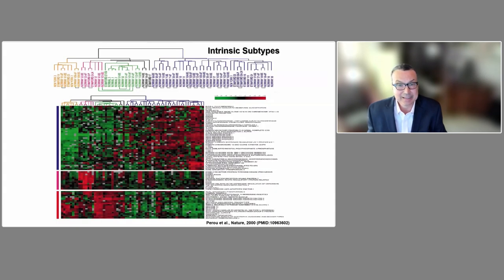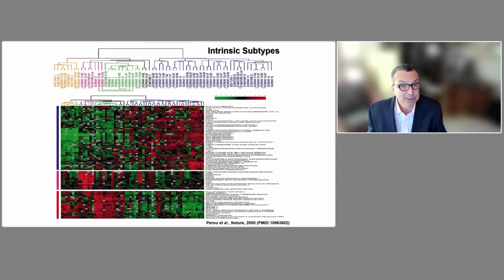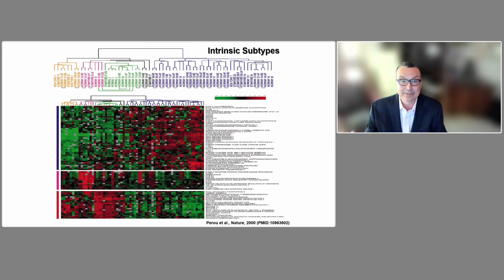The other key finding from this first Nature paper was the identification of the intrinsic subtypes. On the far left of the dendrogram we had the basal-like subtype, which at the time was quite unexpected. Next to it in purple is the HER2-enriched subtype, then the normal-likes, and then the luminals. In this original publication, largely due to small sample size, we didn't get separation of luminal A versus B, but we identified the HER2-enriched subtype and, most importantly, the basal-like subtype.